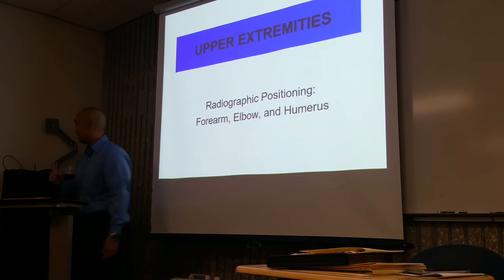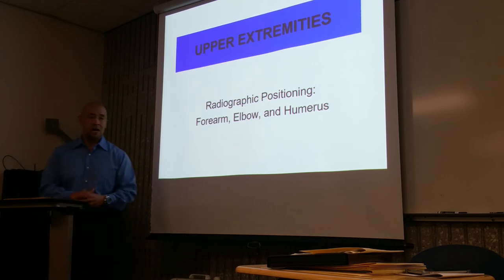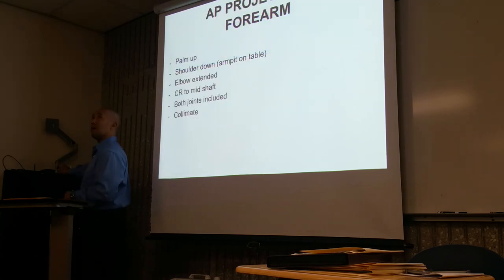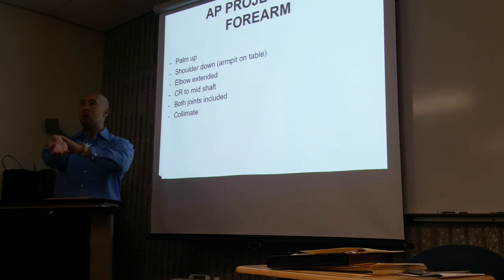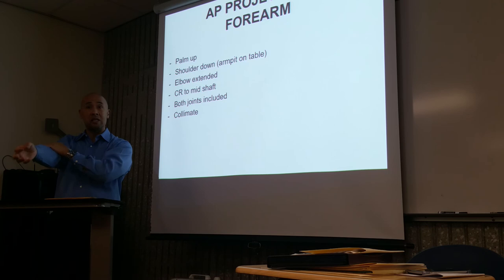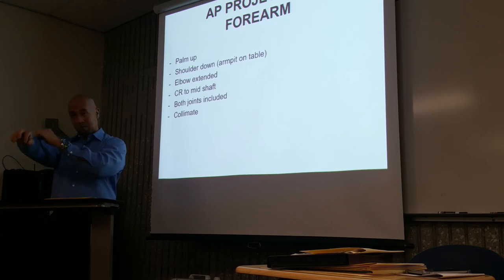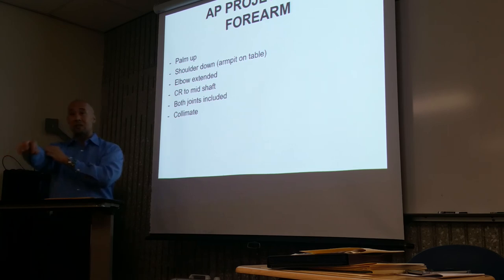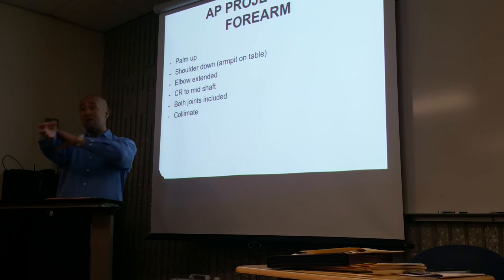Let's talk about positioning — AP projection of the forearm. When prepping the patient for a forearm, we need to get rid of all artifacts: any type of jewelry, jackets, or long sleeves — you may want them to change into a gown. Although x-rays can shoot through clothing, with digital radiography the x-rays can pick up on clothing folds and creases, which may be mistakenly identified as a hairline fracture. So we clear everything from the wrist to the elbow.